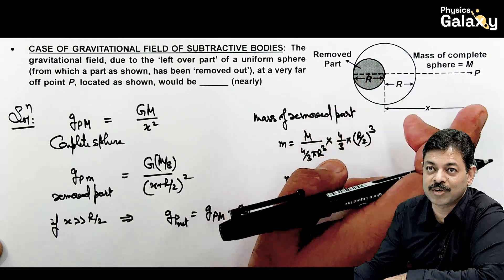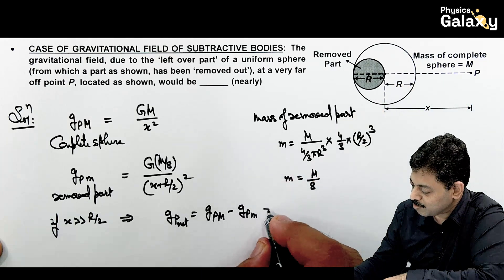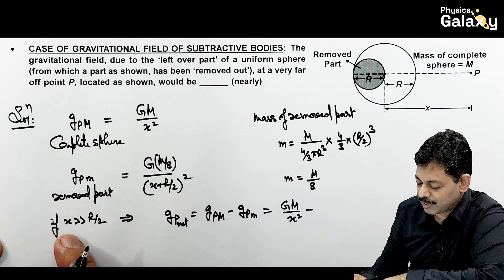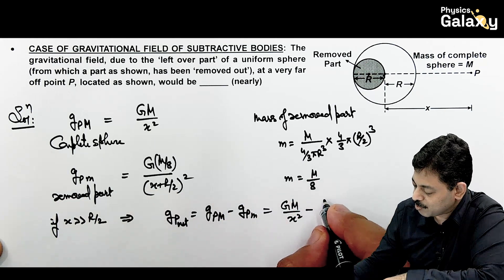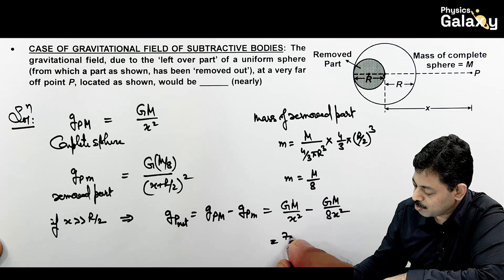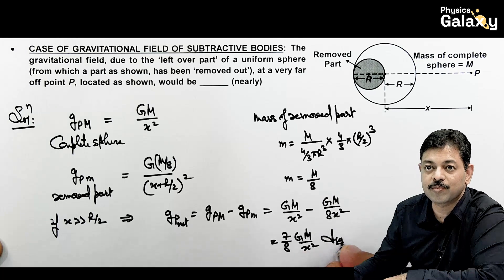Because this part is removed, so its gravitational field at this point P will be subtracted. So this comes out to be GM by X squared minus, here also as X is very large, we can neglect R by 2. So this becomes GM by 8X squared. So this comes out to be 7 by 8 GM by X squared. That is the result of this problem.